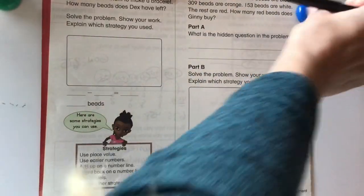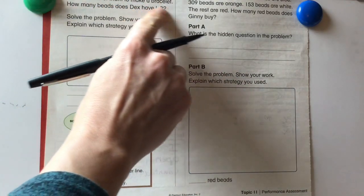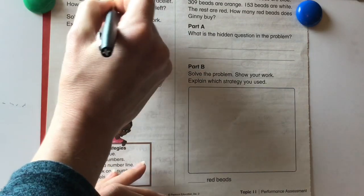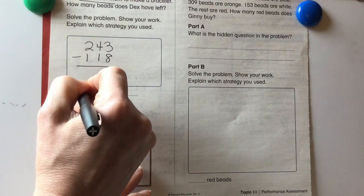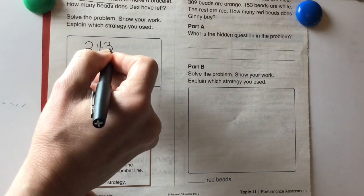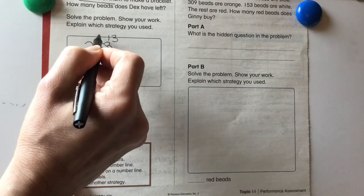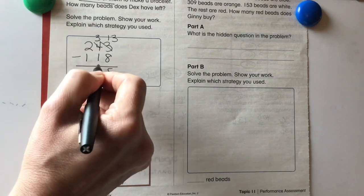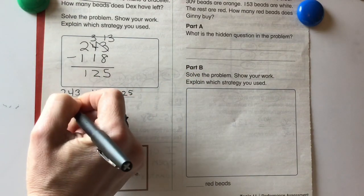Okay, let's go ahead and flip over to the back side of our performance assessment here. Dex buys 243 beads at Betty's store. He uses 118 of them to make a bracelet. How many beads does Dex have left? Solve the problem. So we have 243 beads. He uses 118 of them. He's not getting more. He's actually using them. So we know that's going to be subtraction. Our equation is going to be 243 minus 118. And then we're just going to go through and solve it. 3 minus 8 is not going to work. So we're going to have to regroup. Taking a group of 10s, unbundling it, becomes 13. And this becomes 3. 13 minus 8 is 5. 3 minus 1 is 2. And 2 minus 1 is 1. So we have 125. So 125 beads is what Dex has left.